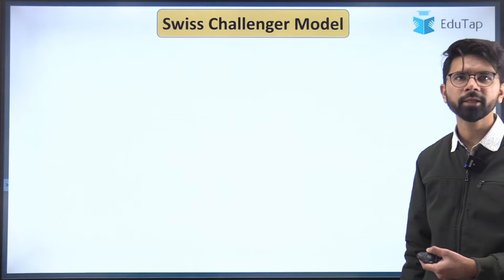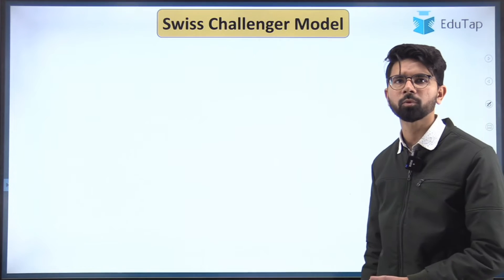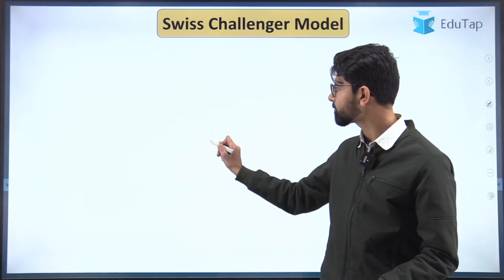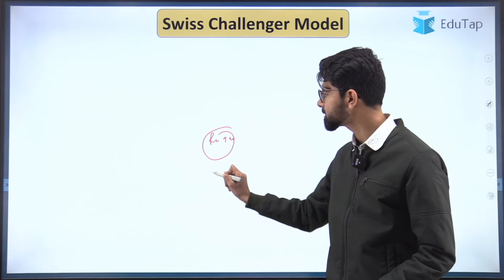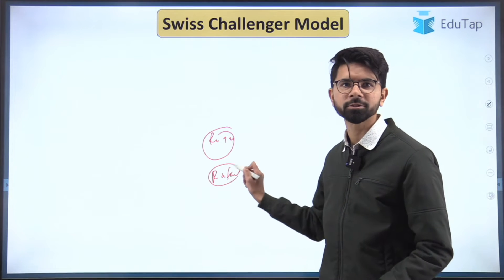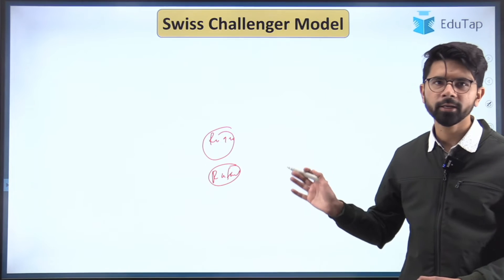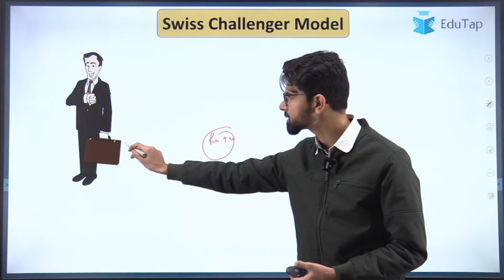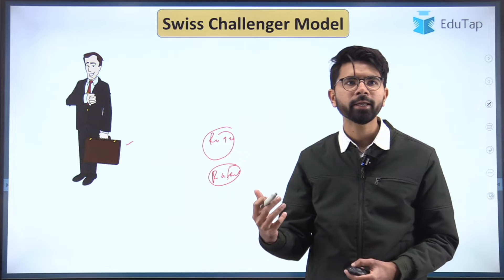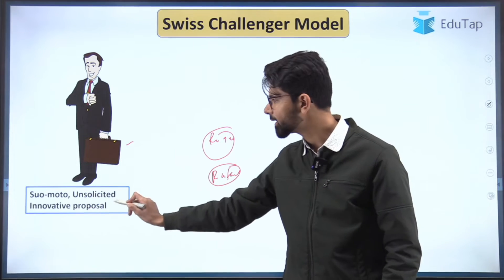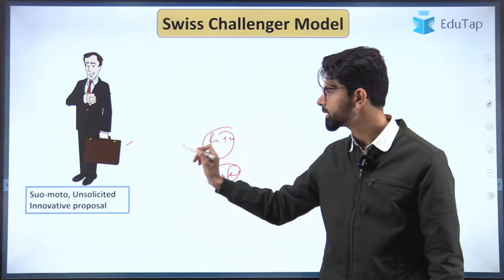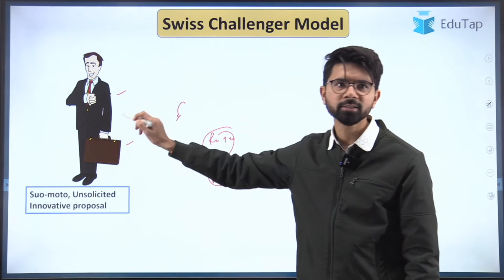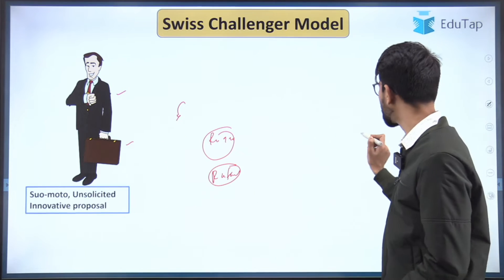Now let us understand another model known as the Swiss challenger model. It is not about Roger Federer challenging Rafael Nadal for a tennis match — it is also pertinent to the Triple P model. Here, an investor or businessman comes up with an idea that is suo motu — his own unsolicited idea, not triggered by the government or any entity. It is completely his own innovative proposal.